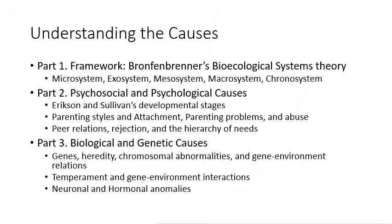I've divided this content into three parts. First, the framework, which I'll offer from Bronfenbrenner's bioecological systems theory. Part two, we'll look at psychosocial and psychological causes, setting the stage through developmental psych content — developmental stages through Erikson and Sullivan's model, parenting styles and attachment, parenting trials and abuse, and finally the impact of peer relations and rejection, and how this fits into the hierarchy of needs.